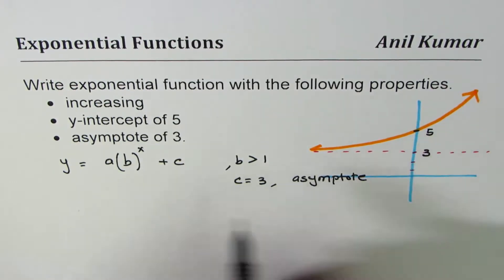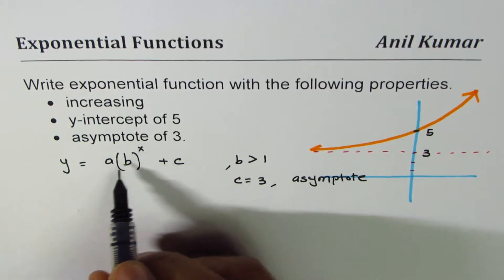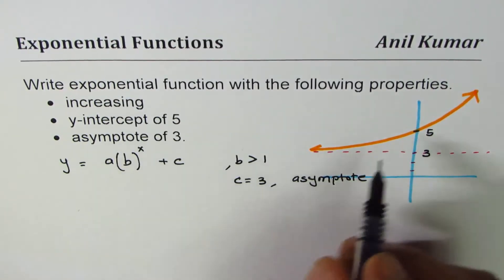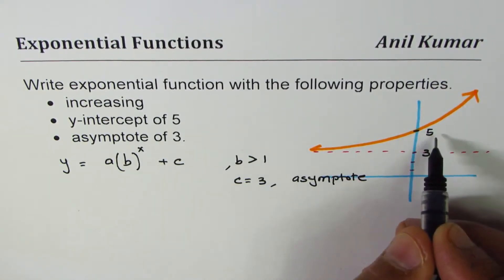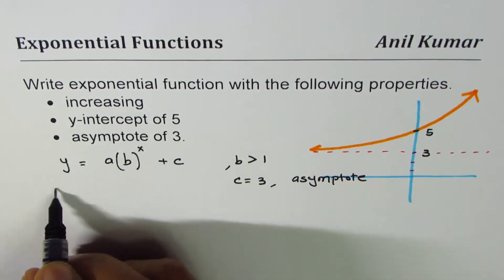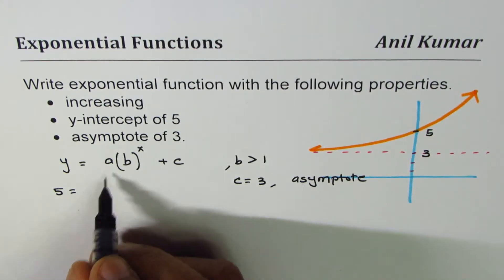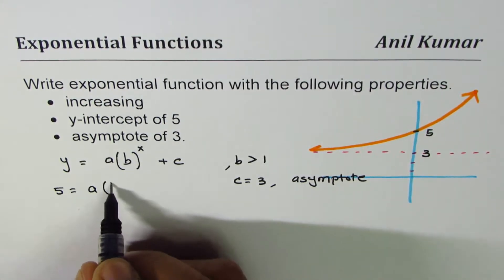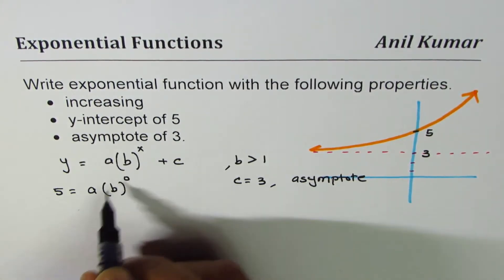Now how do we get y-intercept of 5? Y-intercept of 5 really means that x is 0. I could write this point as (0, 5). So if x is 0, y is 5.